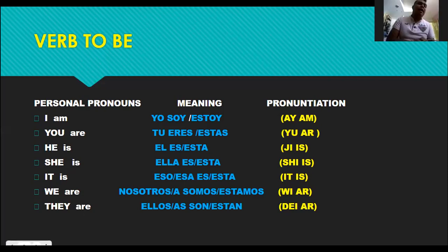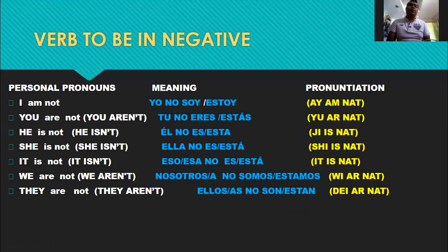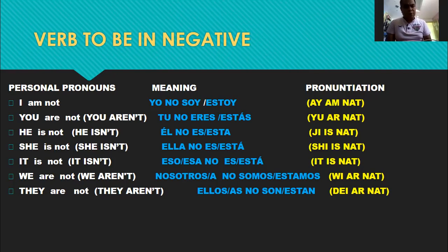What we saw after that was the verb to be in its negative form — vimos el verbo to be en su forma negativa. I am not — yo no soy, yo no estoy; you are not or you aren't — tú no eres, tú no estás; he is not or he isn't — él no es, él no está; she is not or she isn't — ella no es, ella no está; it is not or it isn't — eso no está; we are not or we aren't — nosotros/nosotras no somos, no estamos; and they are not or they aren't — ellos/ellas no son o no están. Okay, that's related to the verb to be.